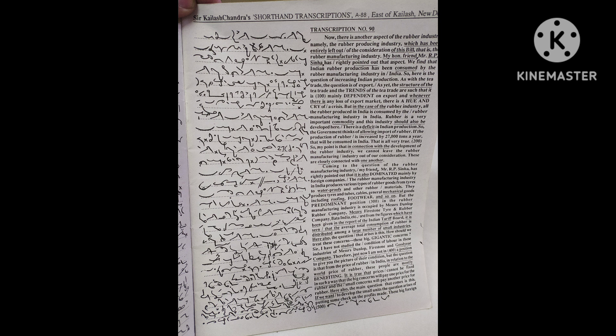But the predominant position in the rubber manufacturing industry is occupied by Messrs Dunlop Rubber Company, Messrs Firestone Tire and Rubber Company, Bata India Limited, etc. And from the figures which have been given in the report of the Indian Tariff Board, it is seen that the average total consumption of rubber is distributed among a large number of small industries.